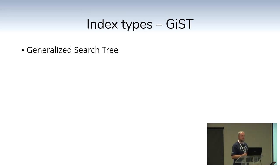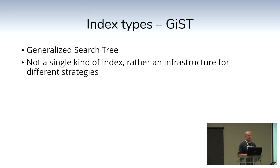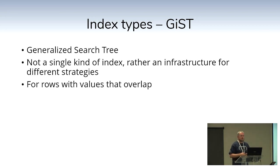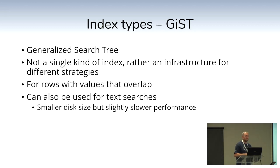The GiST index — Generalized Search Tree — is not a single type of index the way B-tree and GIN are. GiST is a framework where different strategies for indexing can be utilized depending on the data type, module, and operator class you specify. GiST indexes are best for values that overlap — where you have a lot of values that are very similar or the same, or for GIS data where you have ranges or areas that overlap each other. It can also be used for text searches like GIN.